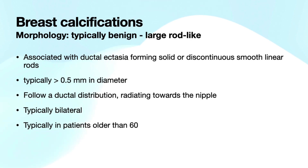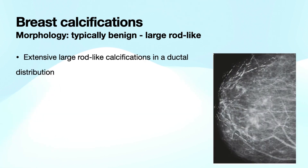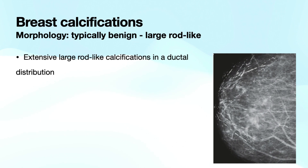Another typically benign type of calcification is large rod-like calcifications. These are associated with ductal ectasia, forming solid or discontinuous smooth linear rods. They're typically rather large — greater than half a millimeter in diameter — and follow a ductal distribution radiating toward the nipple. These are typically bilateral and typically seen in patients older than 60. This is an example of extensive large rod-like calcifications in a ductal distribution — diffuse throughout the breast, these large calcifications oriented towards the nipple are classic for what we call secretory calcifications, or alternatively plasma cell mastitis.